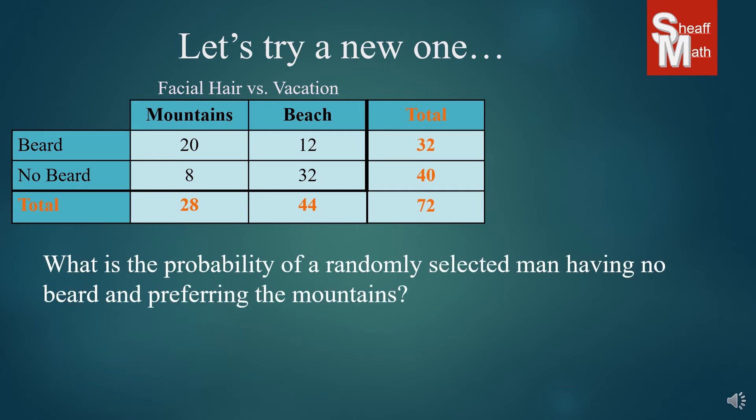And the question is, what is the probability of randomly selected man having no beard and preferring the mountains? So we identify the no beard row, the mountains column, and the number that it represents. And so there were 8 out of this survey of a total of 72. So we have a probability of 8 out of 72, which simplifies to one-ninth. So there's a one-ninth chance that when you survey men, they're going to be no bearded mountain lovers.